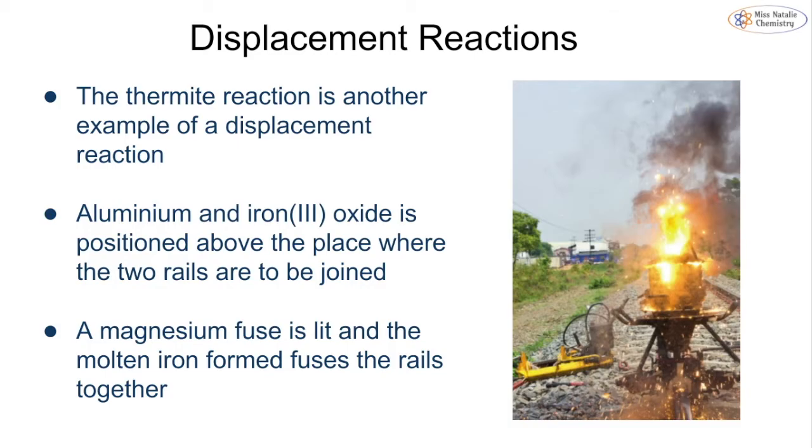To also see the thermite reaction, you can see it is extremely exothermic because we're getting quite a lot of heat and fire being generated. That's an example of a displacement reaction. We have aluminium and iron oxide positioned above the place where we want to join the two rails together. We light a magnesium fuse that gives off heat and has a very exothermic reaction. This encourages the aluminium and iron oxide to react, again being very exothermic. The molten iron formed in this reaction then fuses the rails together. The molten iron passes down to where the two railway lines will fuse together.